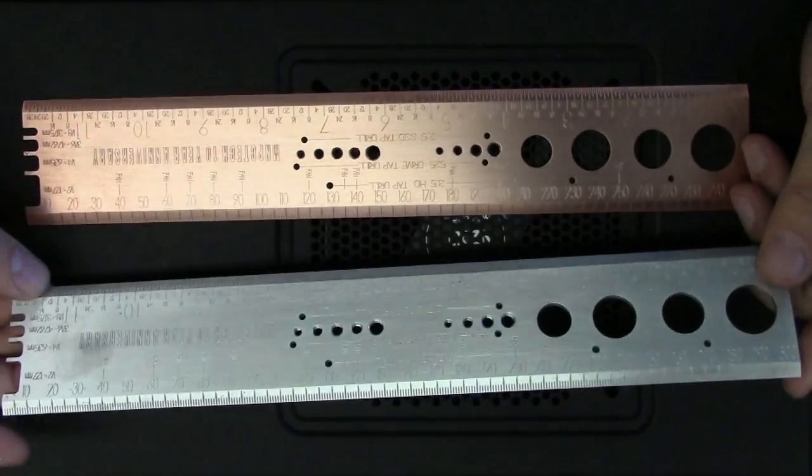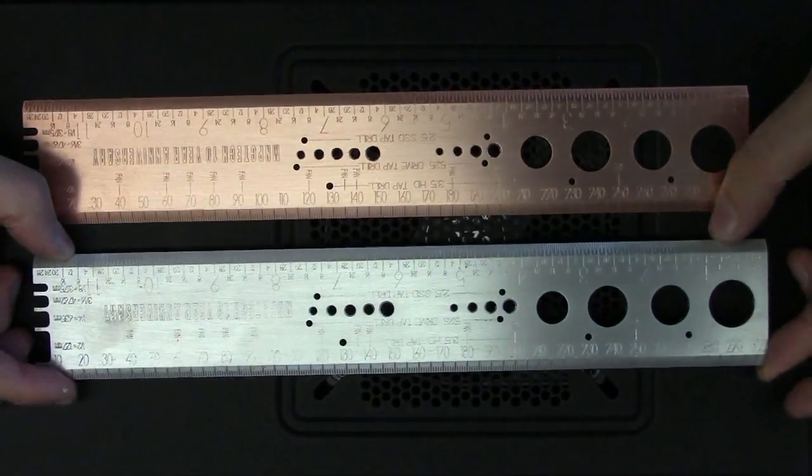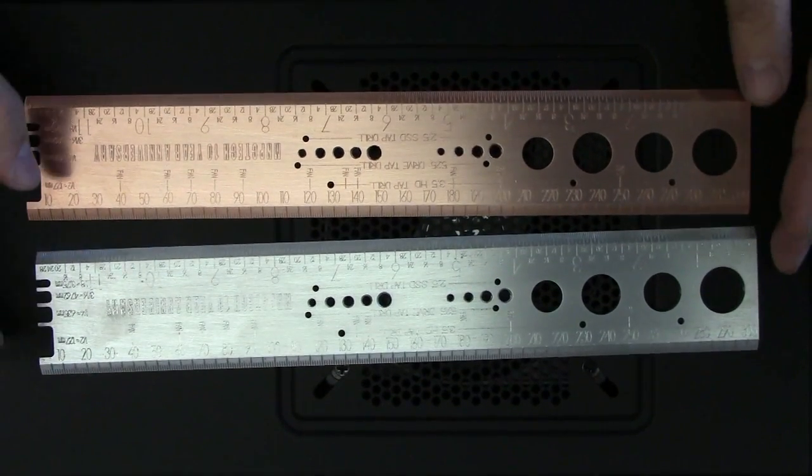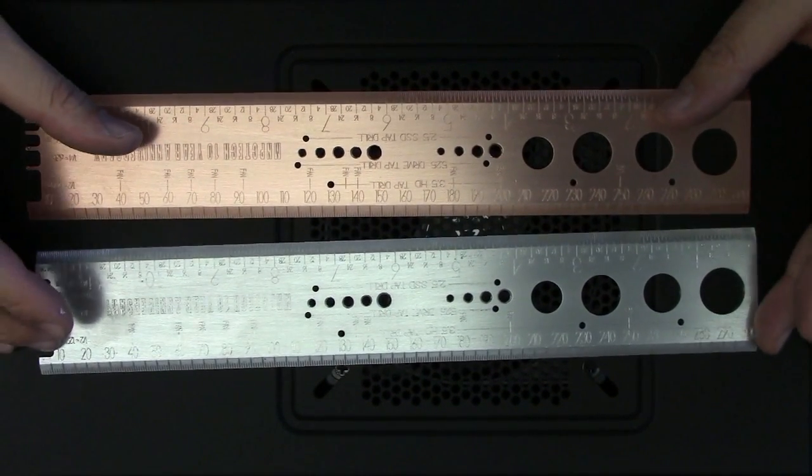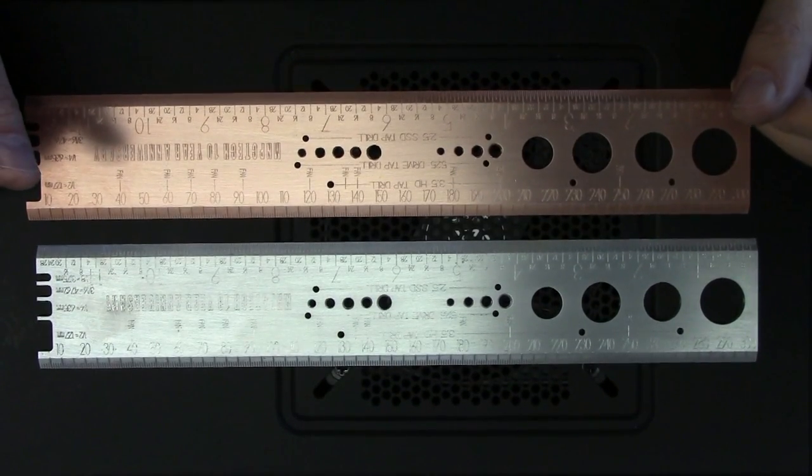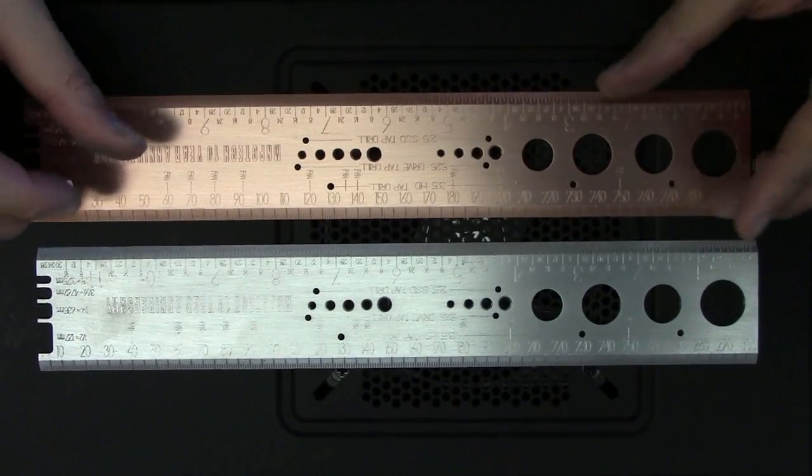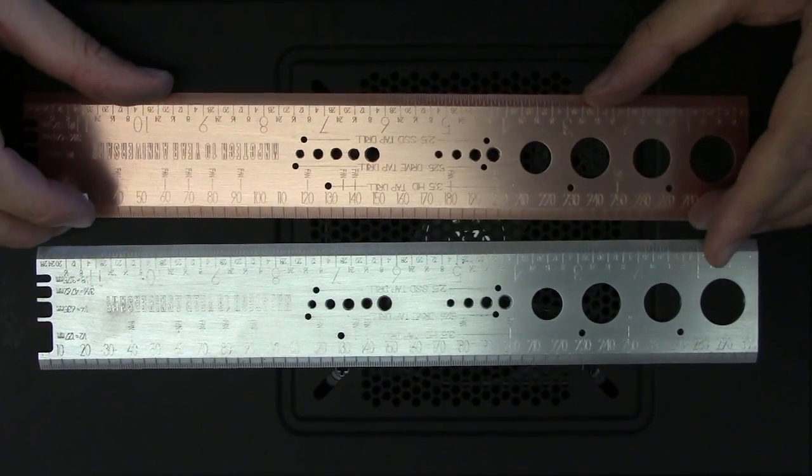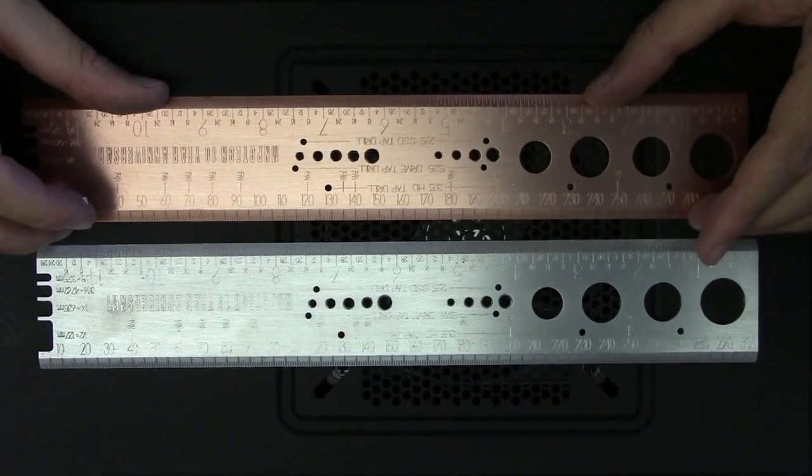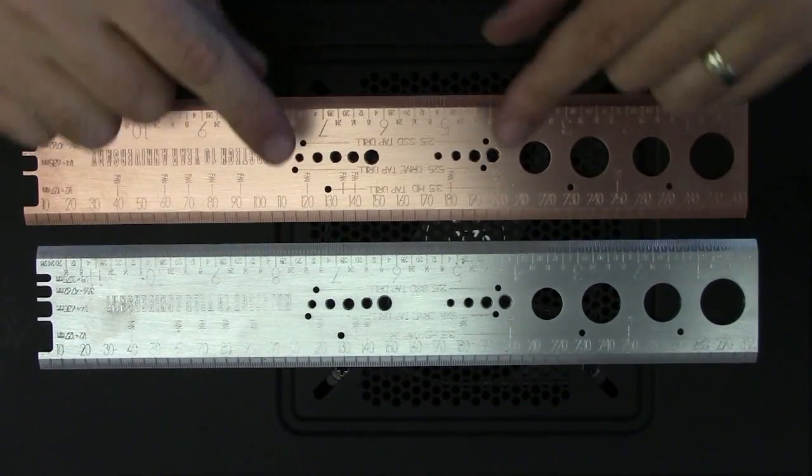Now, normally we make this from aluminum 6061. This is the one that you most commonly see in our store because aluminum's cheaper. It's a cheaper material to buy. Copper, much more expensive. And how many people can afford to spend $69 on a ruler?